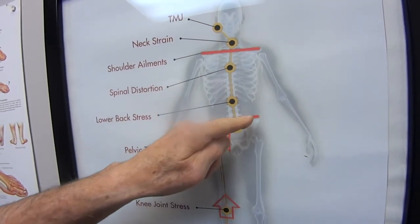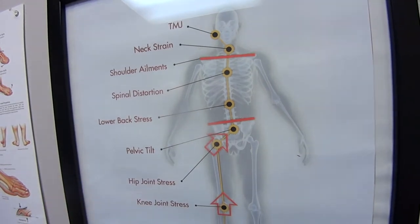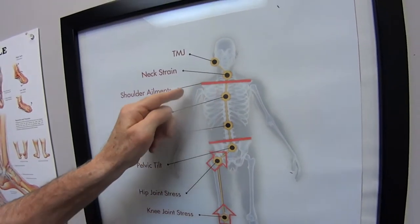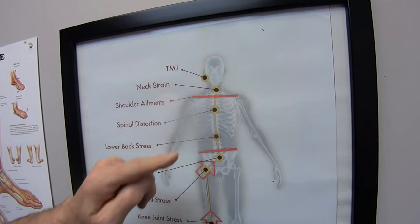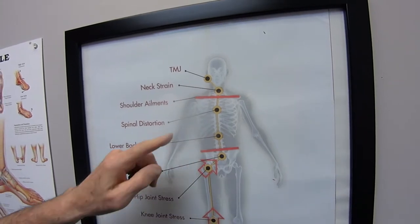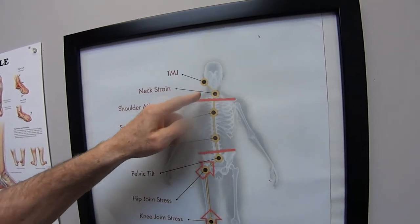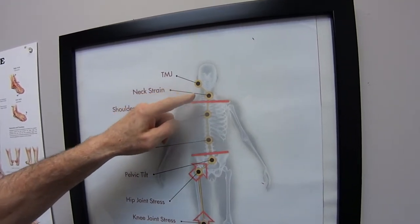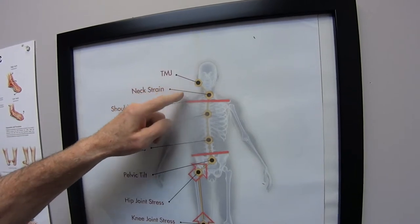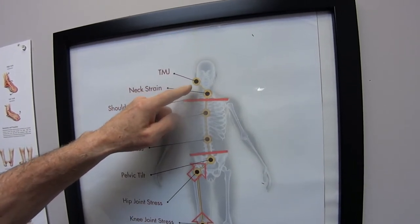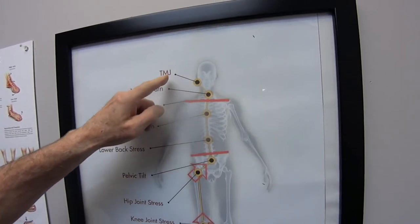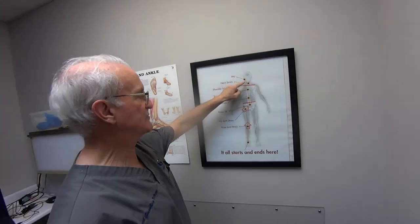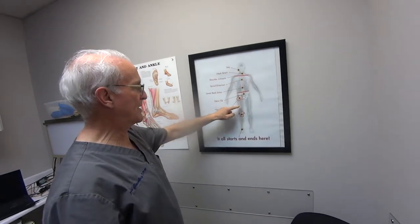If you have a leg length discrepancy, your hip's going to be at an angle. That will change everything up and through here, including the line across your shoulders, and that, in turn, affects up into your jaw. So people who have temporal mandibular joint disease — they have trouble with their jaw — will often have trouble lower down.